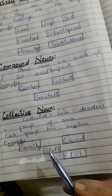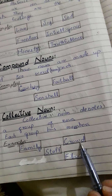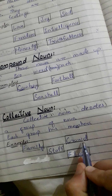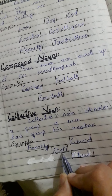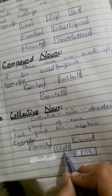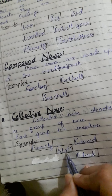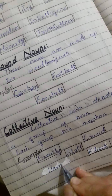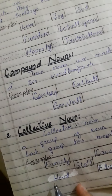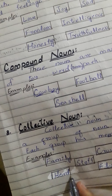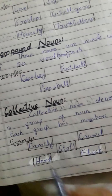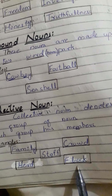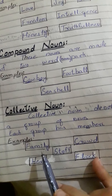Next: crowd — a group of people. Family, crowd, staff — a group of teachers. Group of animals. Next: flock — a group of birds. We call these collective nouns.